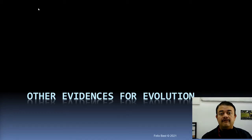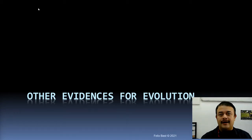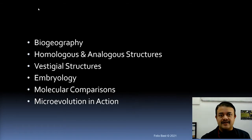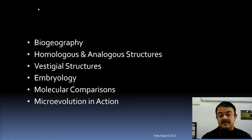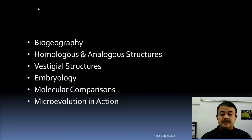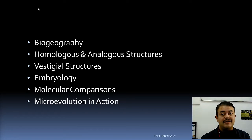Other evidences for evolution — apart from fossils, which we have already discussed — include biogeography, homologous and analogous structures, vestigial structures, embryology, molecular comparisons, and microevolution in action.